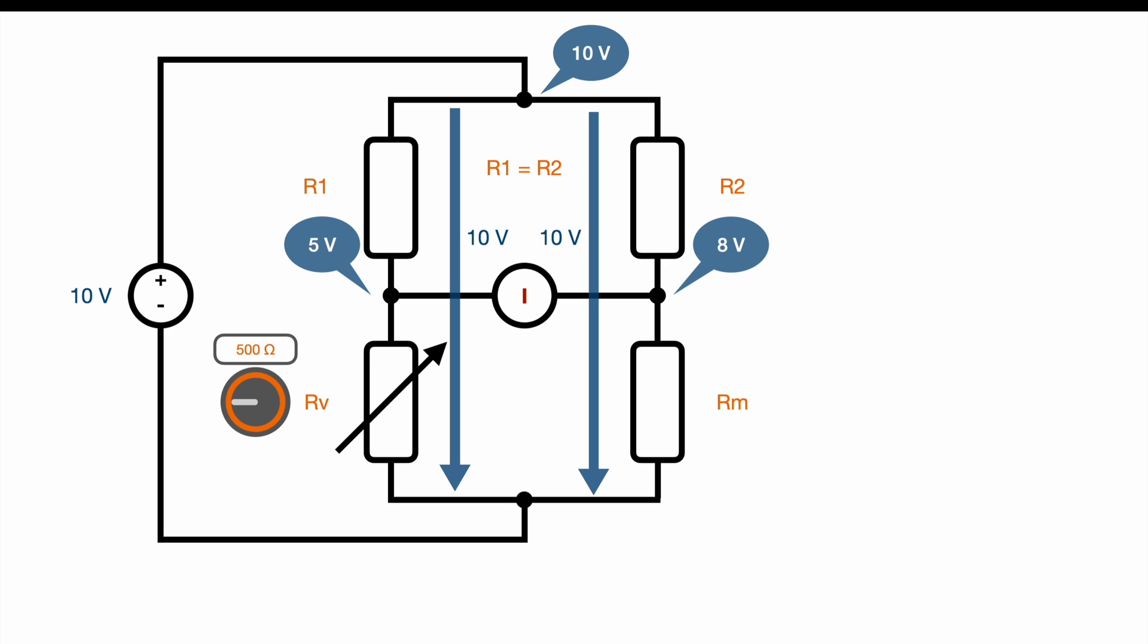In this case the 5 volts on the left hand side are too small, so we need to increase RV to reach a higher potential on the left hand side. And it turns out at 708 ohm we have reached the same potential on the left hand side as on the right hand side, which will lead to 0 amps in our amp meter.